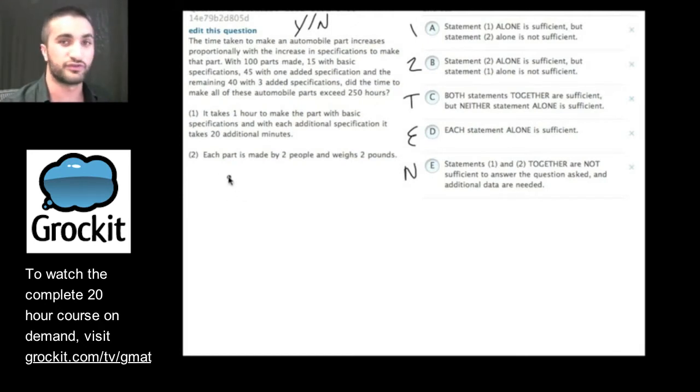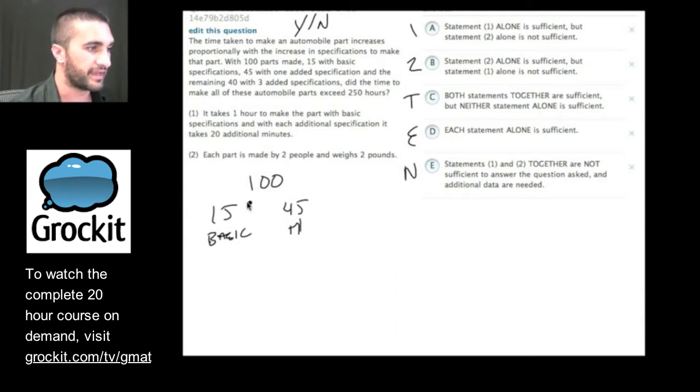Let's go ahead and do that. The time taken, and you can sort of do this as you're reading the question, and some of the situations will see me doing it literally as we read it for the first time. With 100 parts made, so I just rewrite everything and make my own version of the question. With 100 parts made, 15 with basic, 45 with plus one specification, and the remaining 40 with plus three specifications, did the time to make all the automobile parts exceed 250 hours?